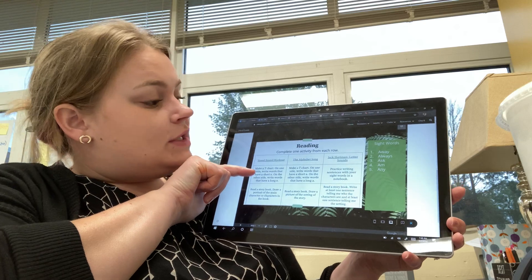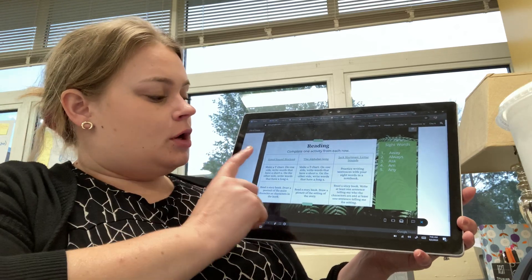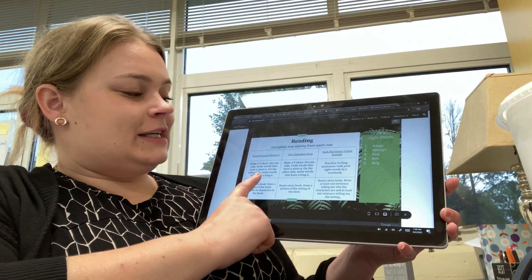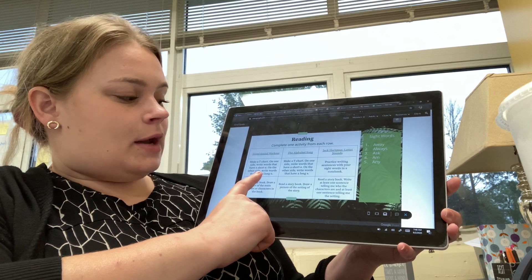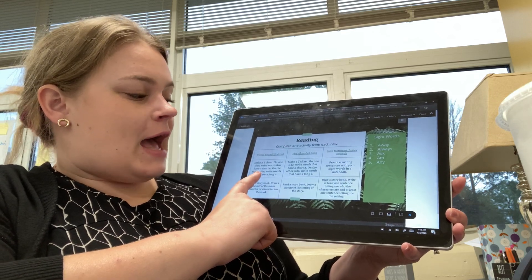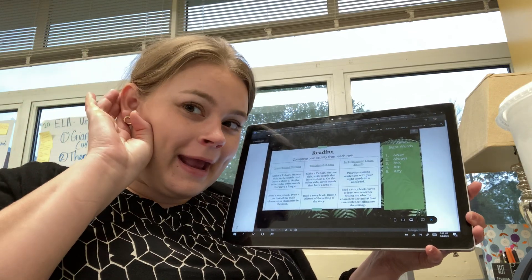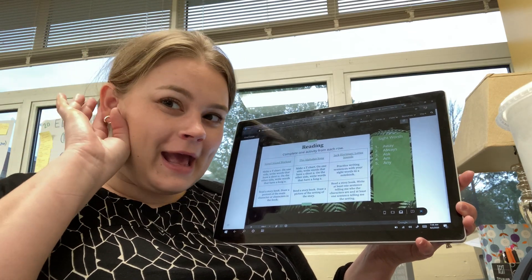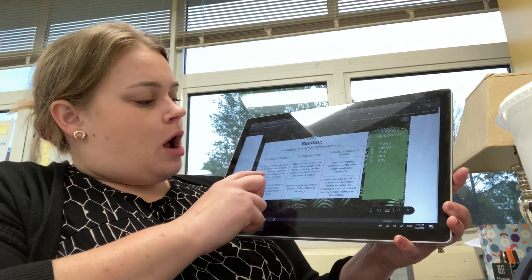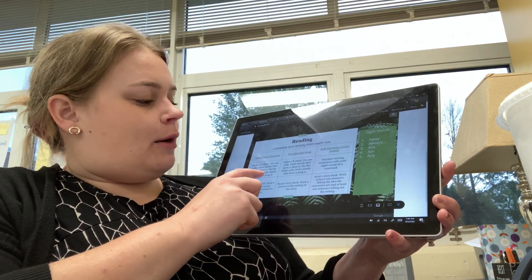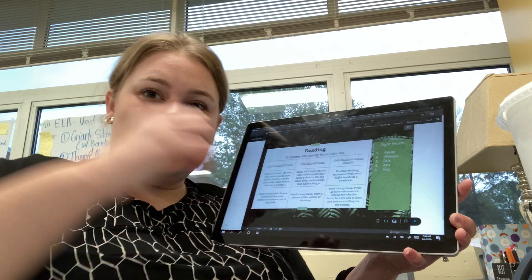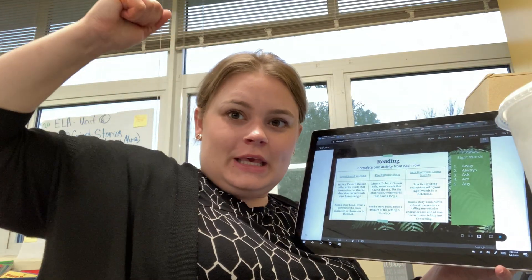Row two is totally different. Your first choice is to make a T-chart. On one side, write words that have a short E sound. Remember? Eh, eh, I can't hear you, eh. On the other side, write words that have a long E. E, e.